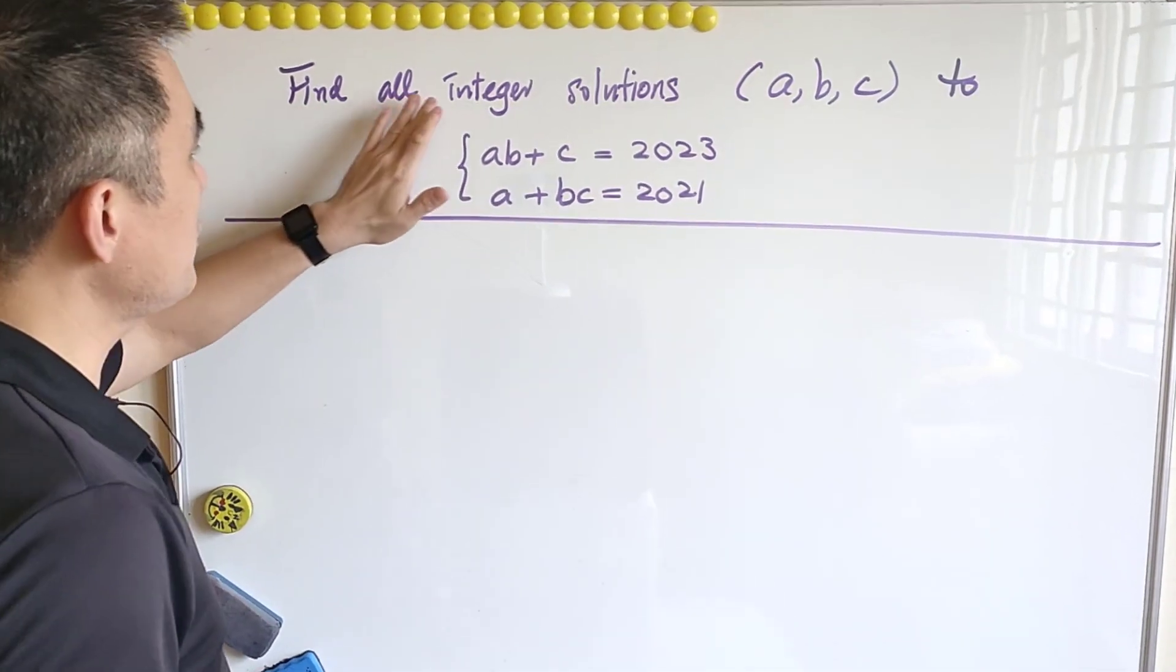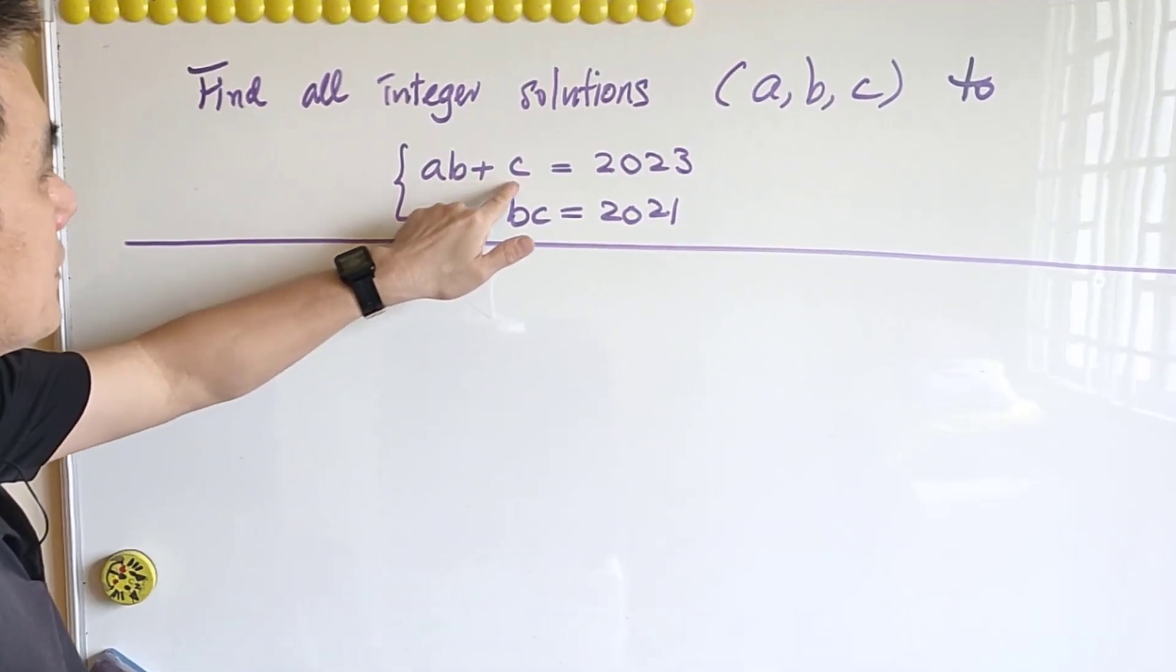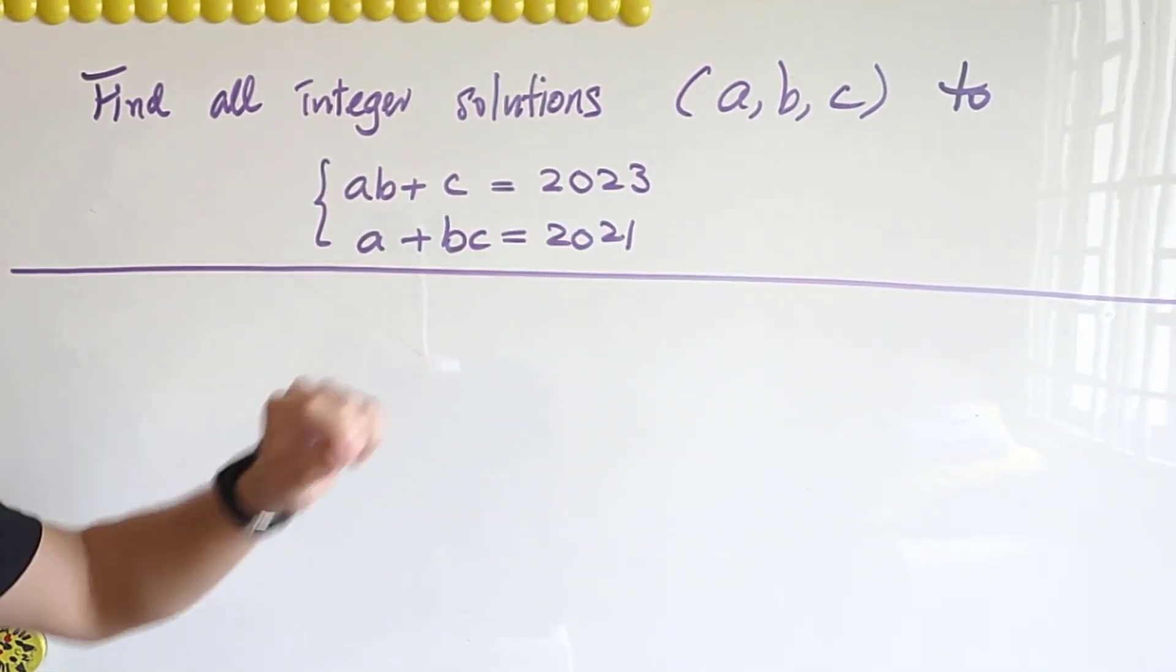So for today, we are asked to find all the integer solutions to this simultaneous equation. AB plus C equals to 2023 and A plus BC equals to 2021.